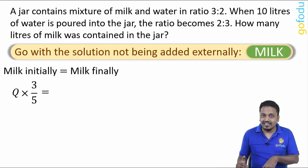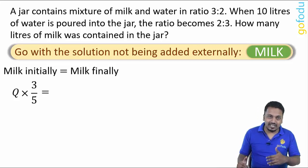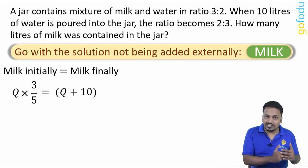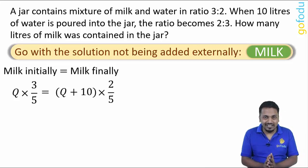And finally the mixture quantity after addition of 10 liters is Q + 10. And milk will be (Q + 10) × final milk proportion 2/5. So from here Q can be easily calculated as 20 liters.